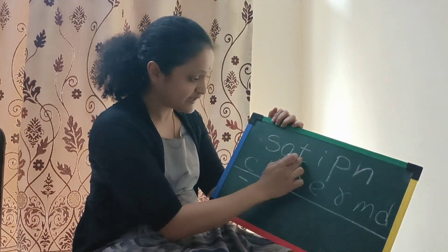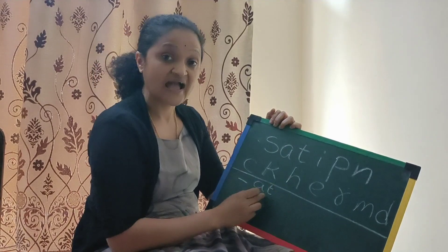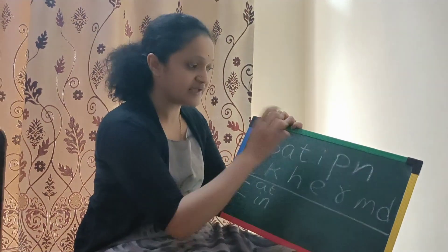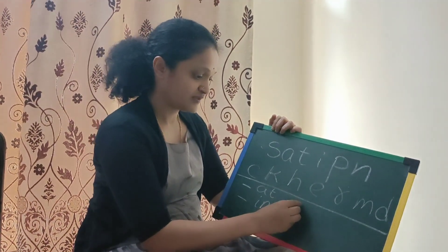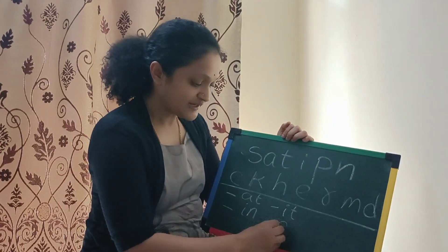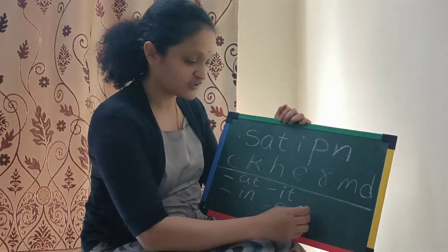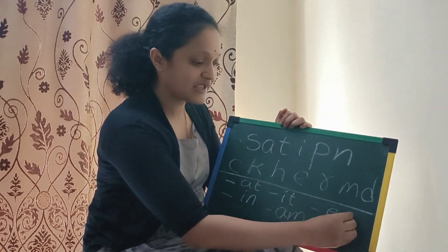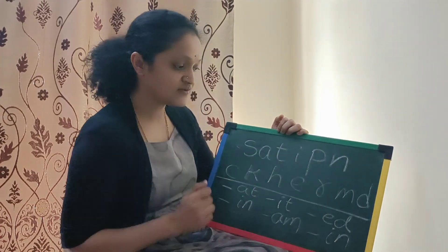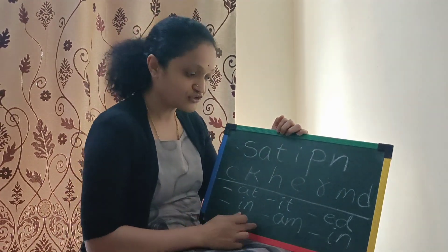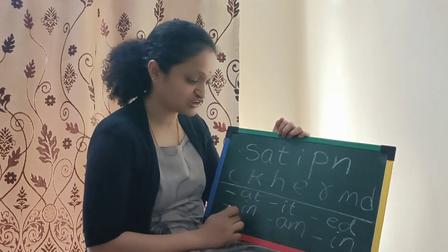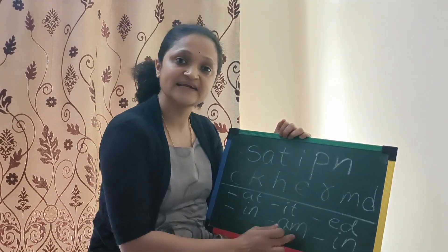Here you can teach them the 'at' word family. Like this you can introduce any of the word families. If the child is perfect in any of the word families, the rest of the words the child can read very easily.